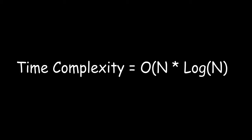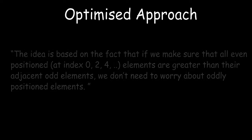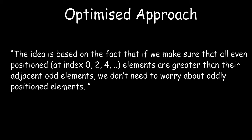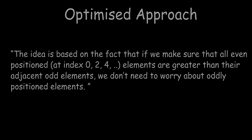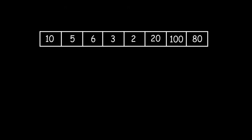The time complexity of this algorithm is O(n log n). Now let's look at the second, optimized method. The idea is based on the fact that if we make sure all even-positioned elements — at indices 0, 2, 4, and so on — are greater than their adjacent elements, then we do not need to worry about the odd-positioned elements.